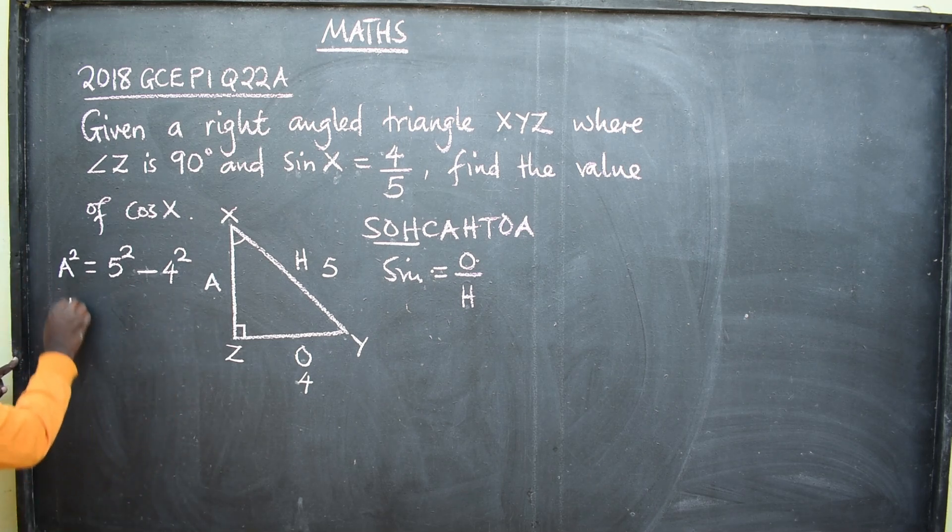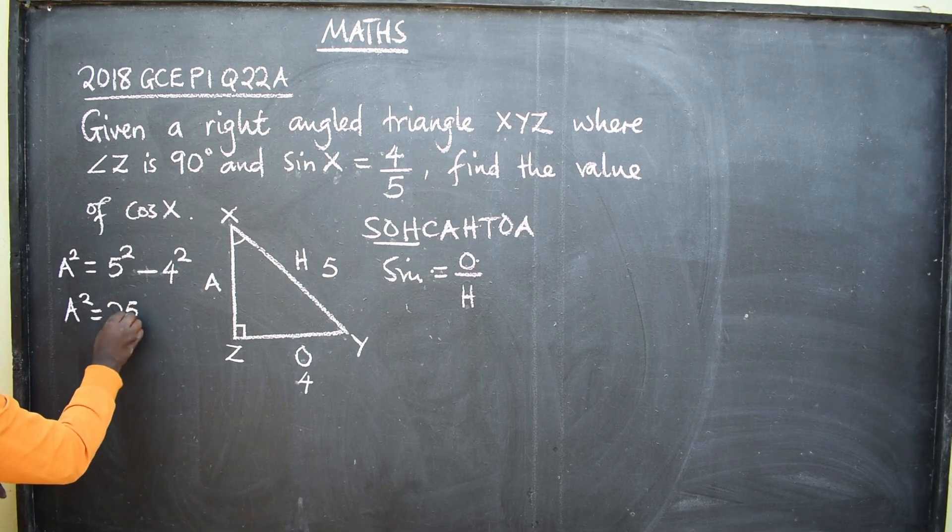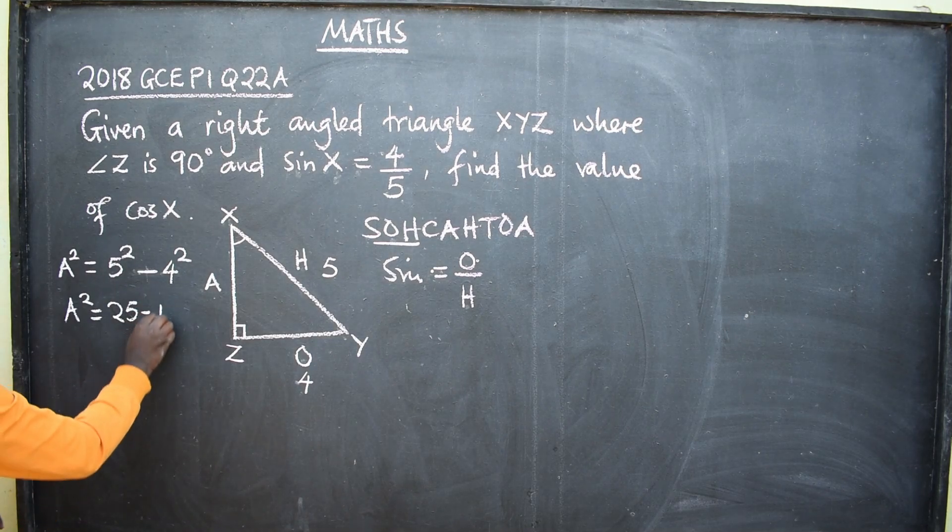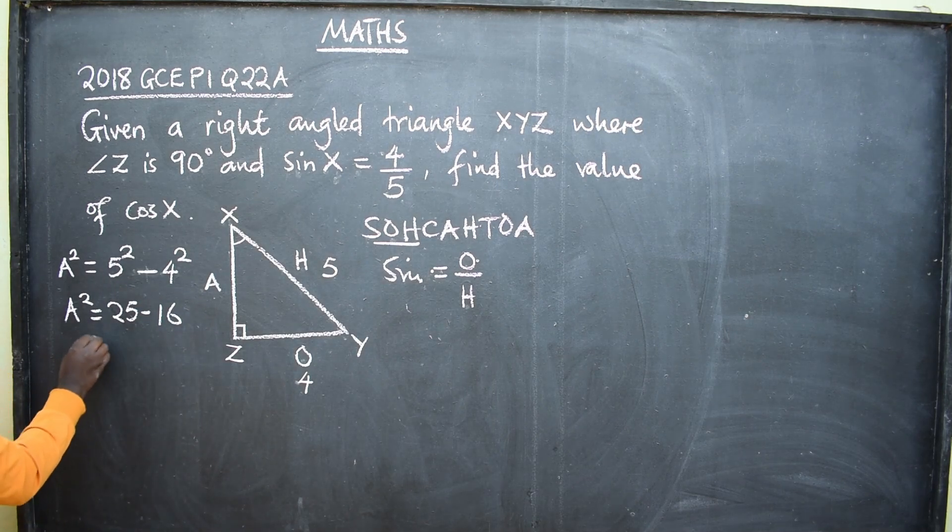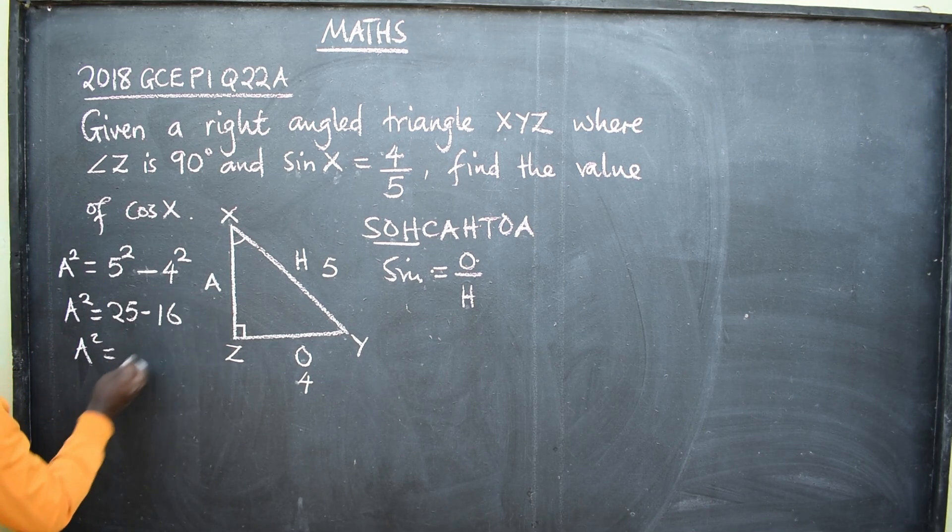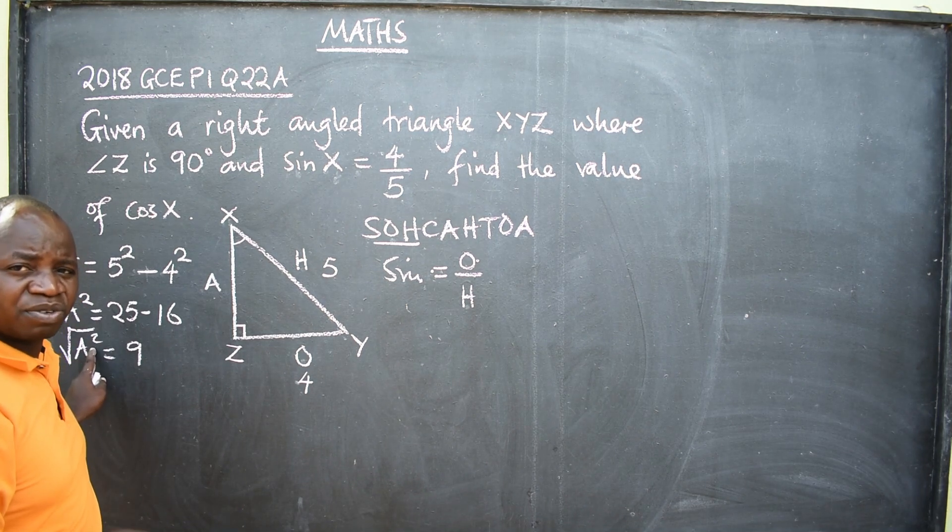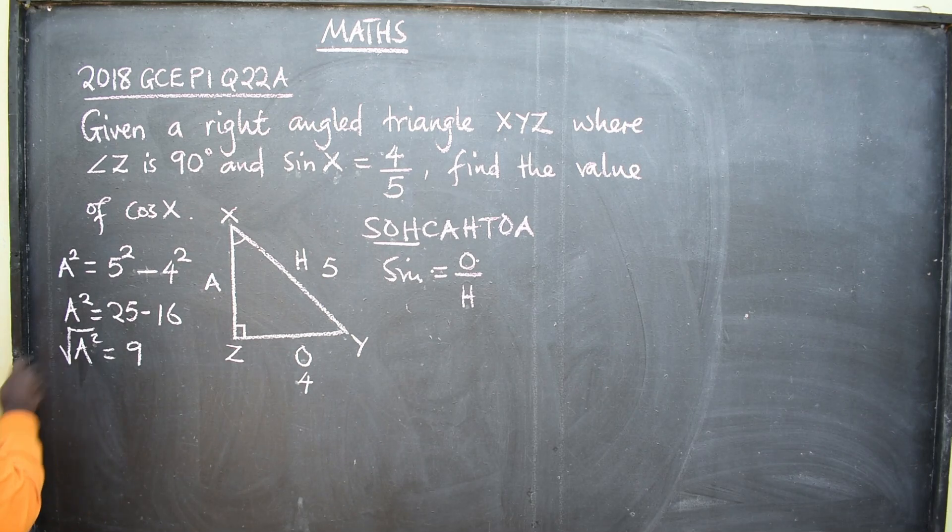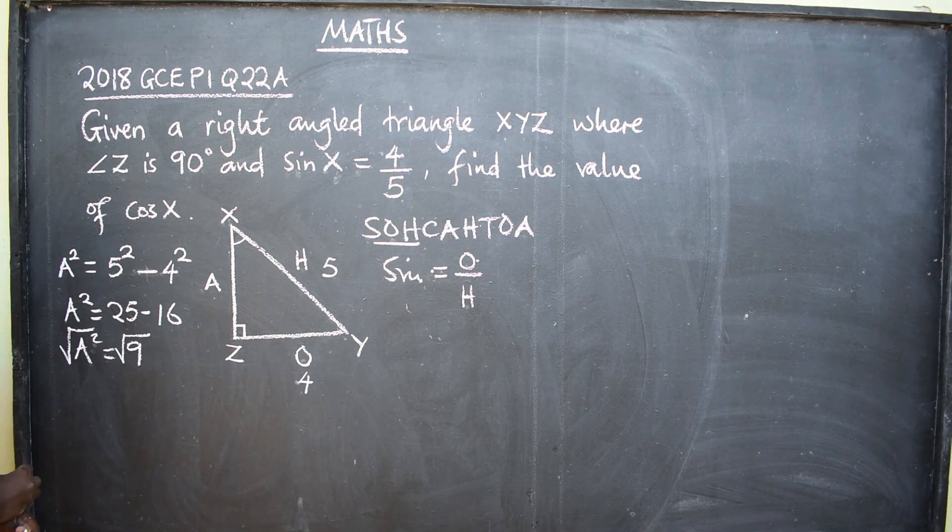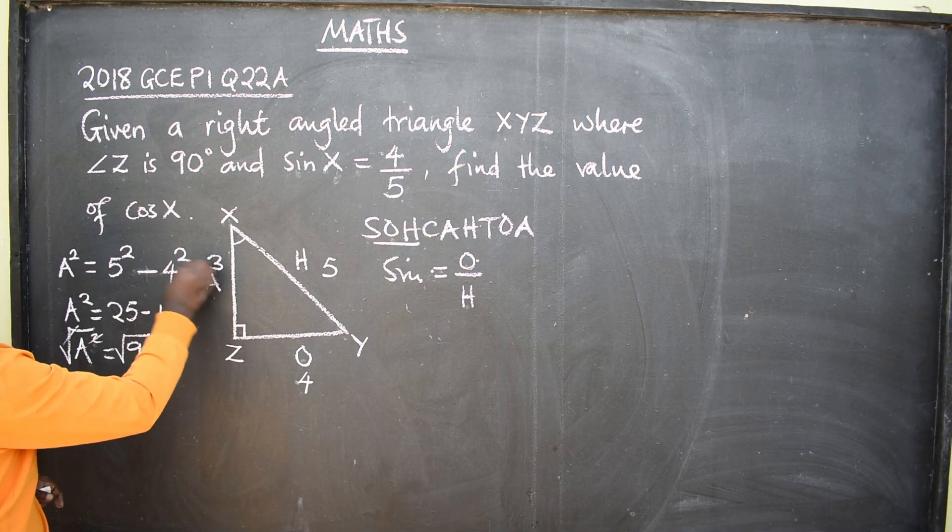Then I'll say A squared will be equal to, what is 5 squared? 25. Minus 4 squared? 16. Then A squared will be equal to 25 take away 16. I'm going to get what? 9. Then square root. Introduce square root because you need to get rid of the square. So introduce square root. Even on the other side, square root. Cancel this. Your A now becomes, get a positive value, 3. So this is 3.